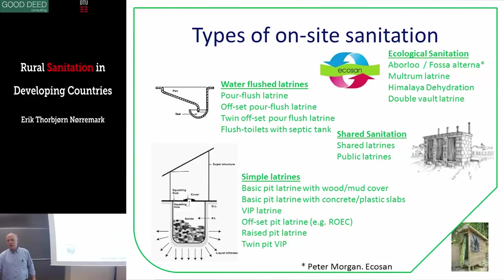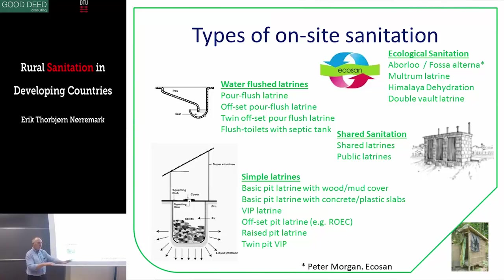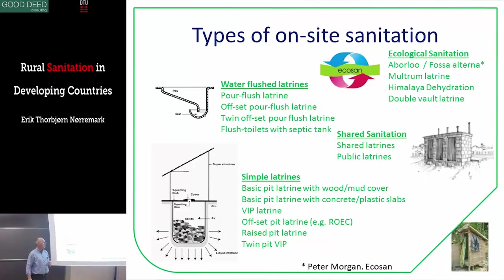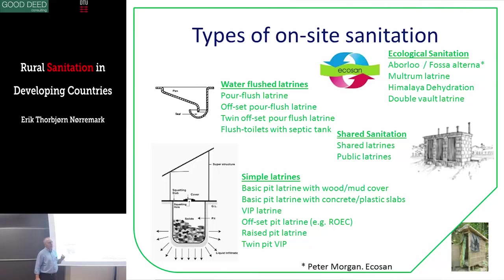Types of on-site sanitation: you have a simple latrine like the model we just saw. The cover in the middle can be very simple — wood with mud, as we've seen in pictures from Tanzania. It works, but it's difficult to clean, so it's not very hygienic. To improve quality and make cleaning easier, you can use a concrete or plastic slab. You can also add ventilation. The VIP latrine — ventilated improved pit latrine — is a model that removes smell and greatly reduces the number of flies coming out of the pit.